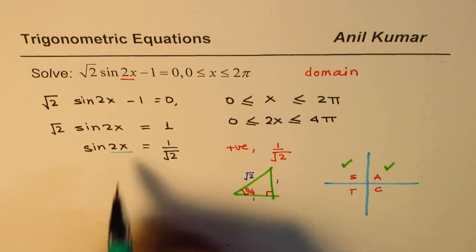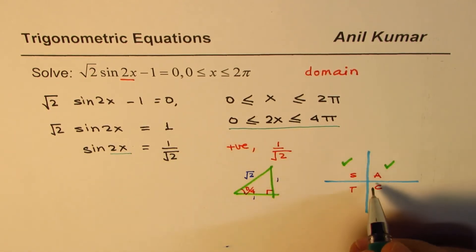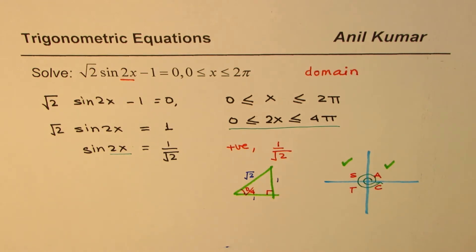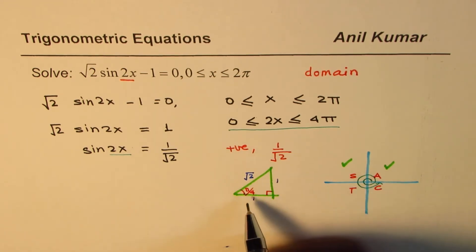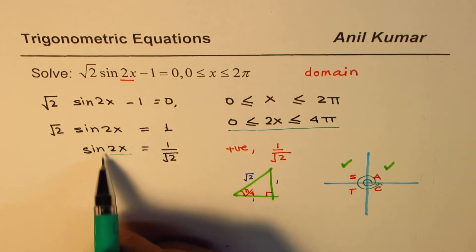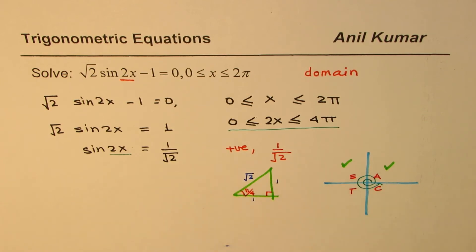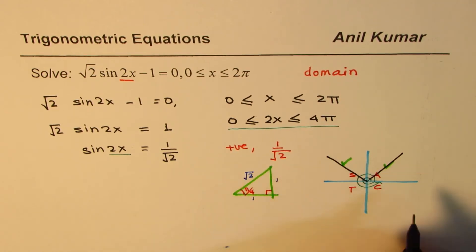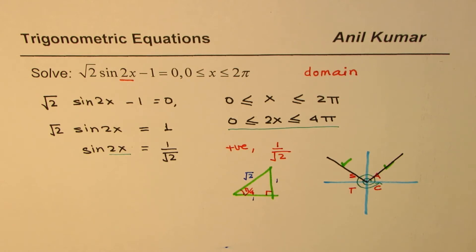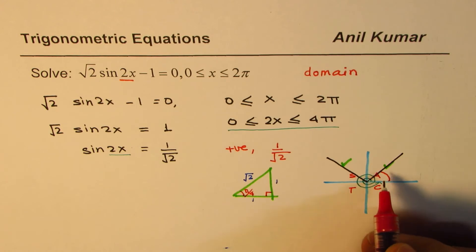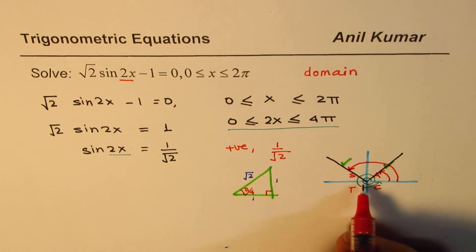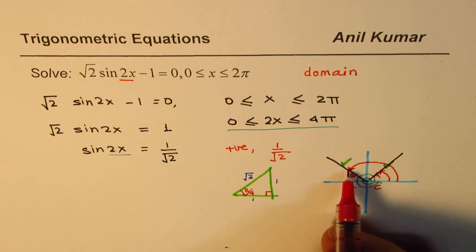Since 2x has domain 0 to 4π, that represents two full circles — 0 to 2π is one circle, and then to 4π is the second. We know that 2x should be at 45 degrees. The position could be either in quadrant 1 or quadrant 2. So in one circle we have two solutions: one is π/4, and the other is π − π/4 = 3π/4.